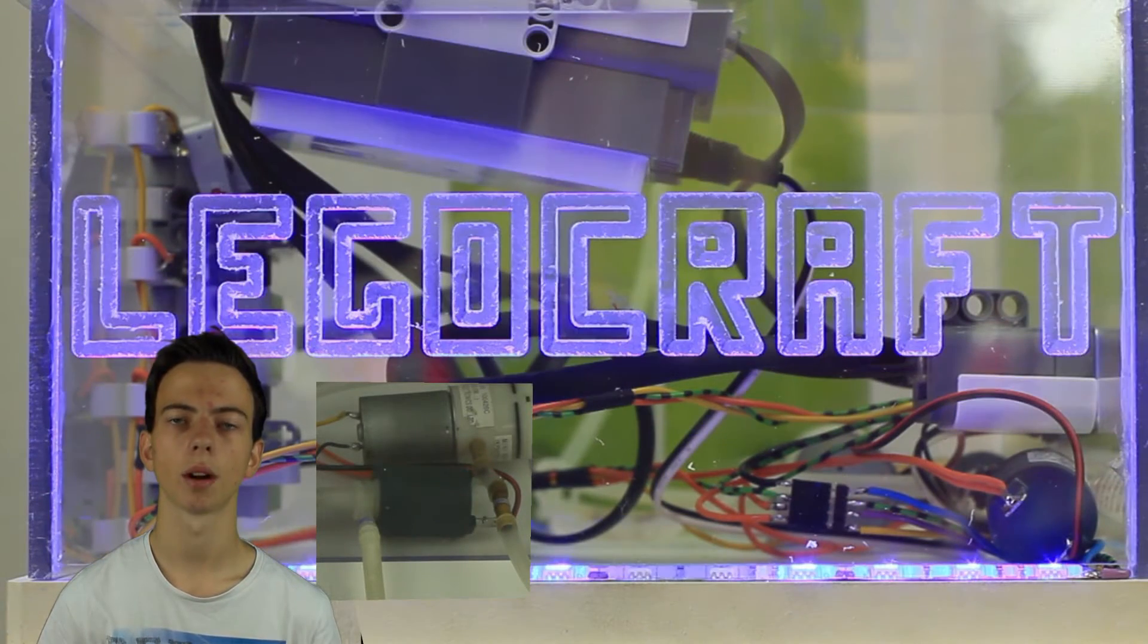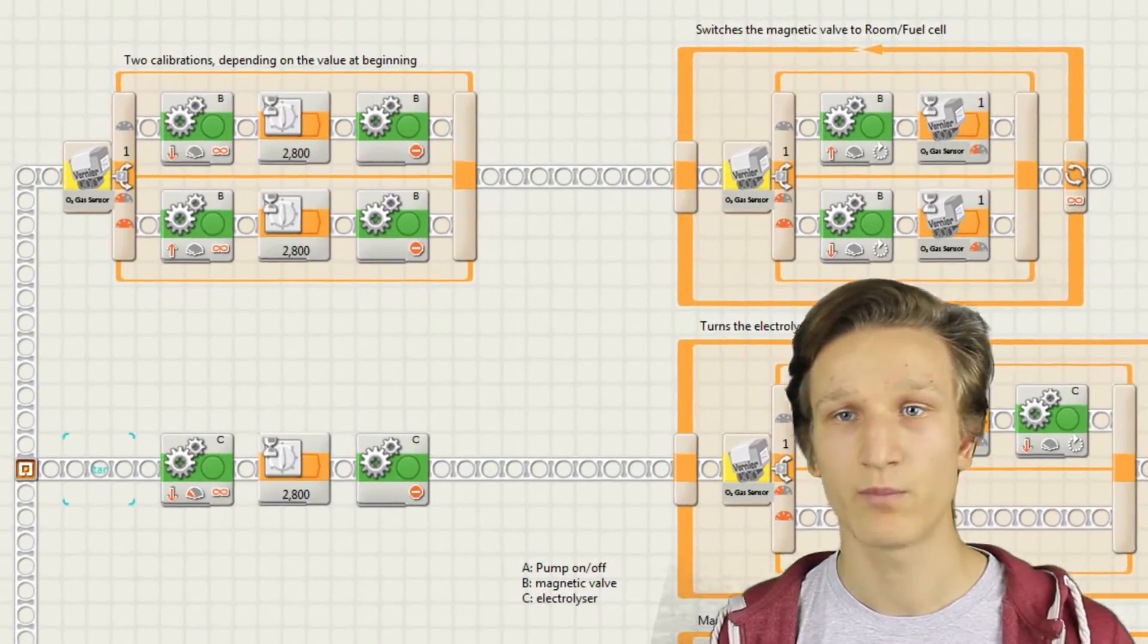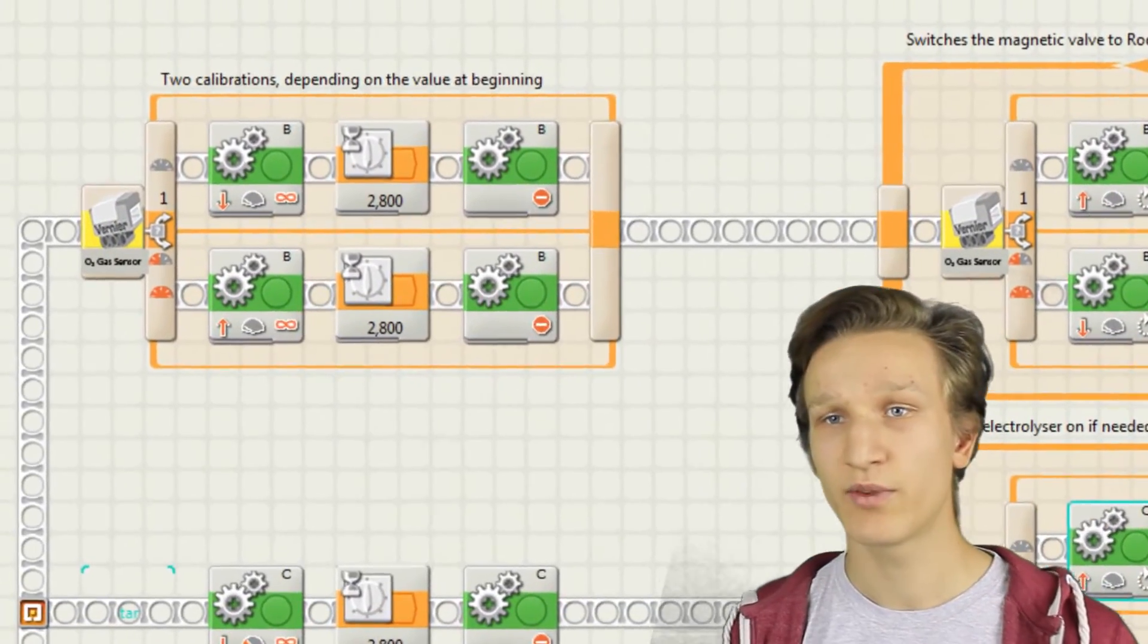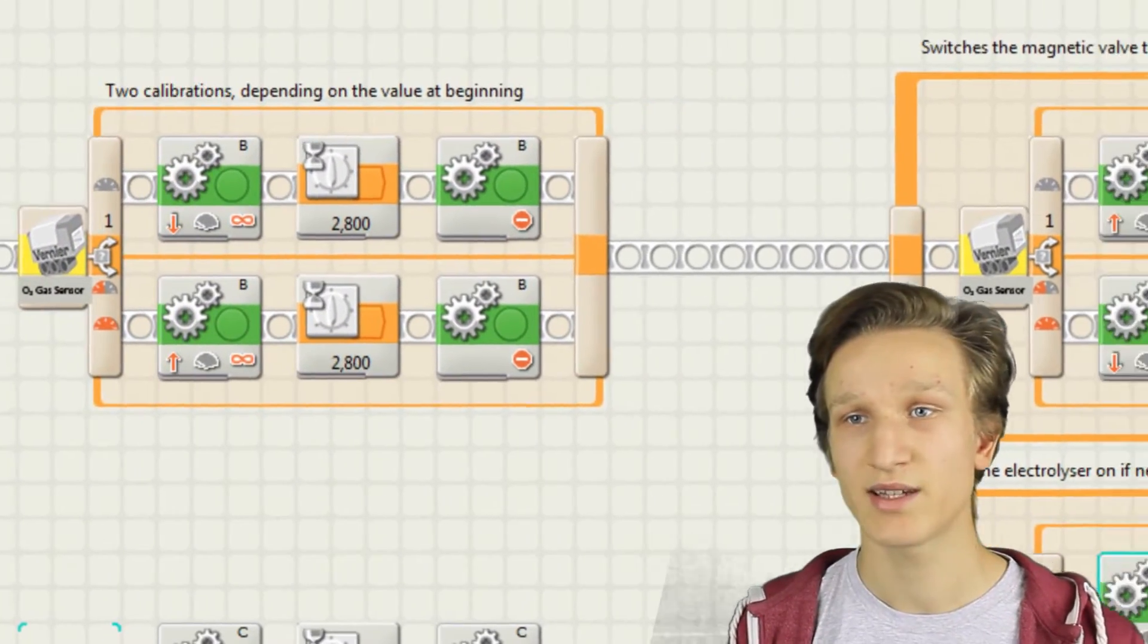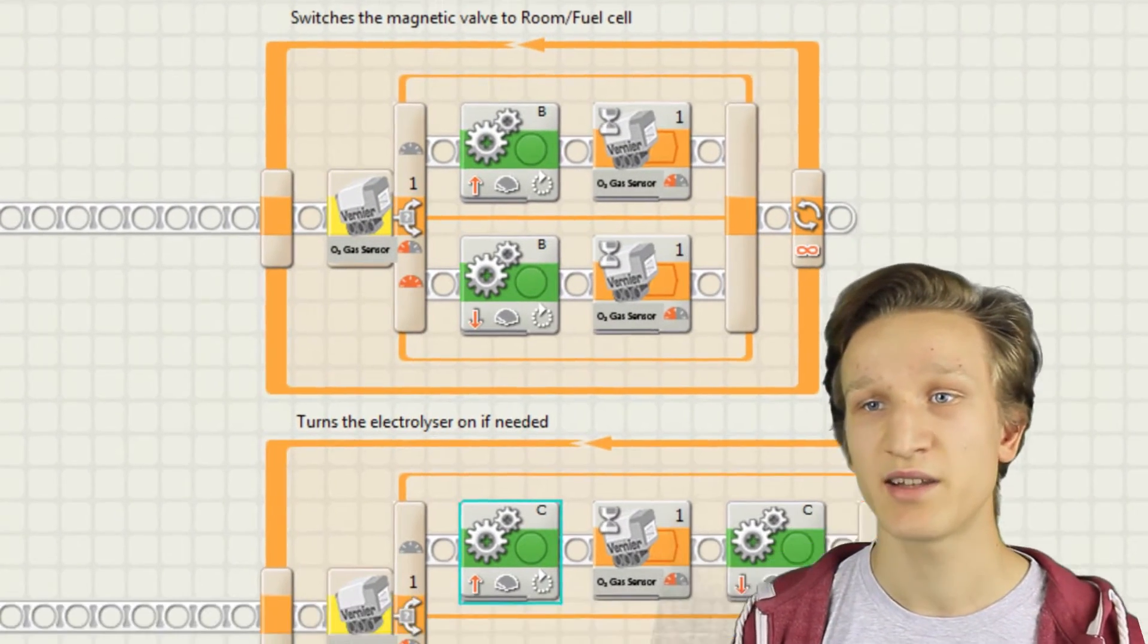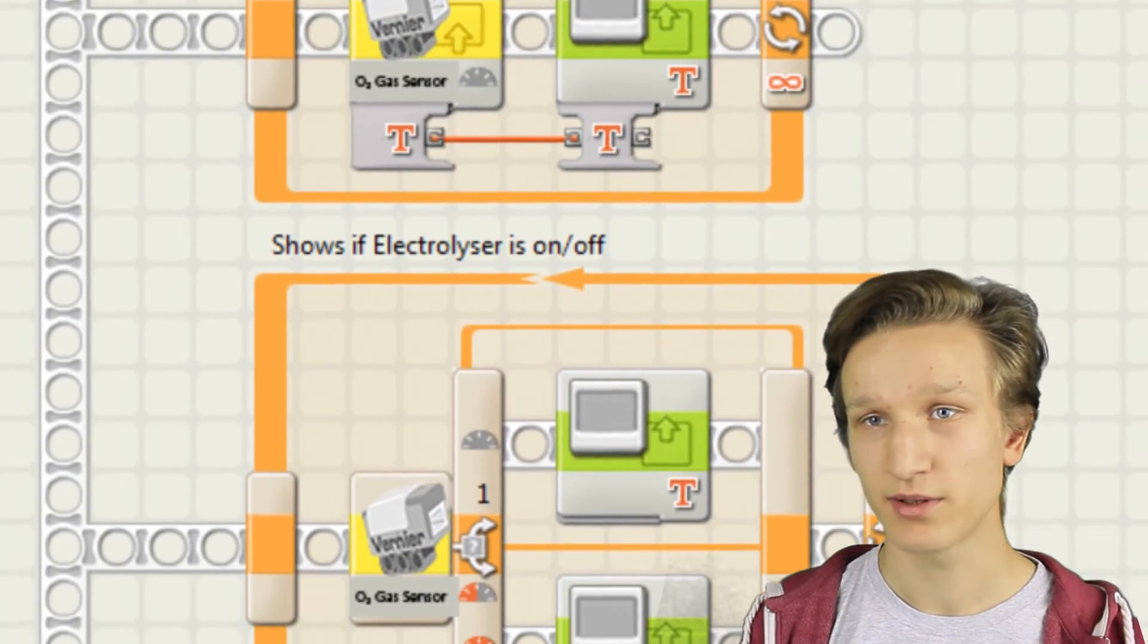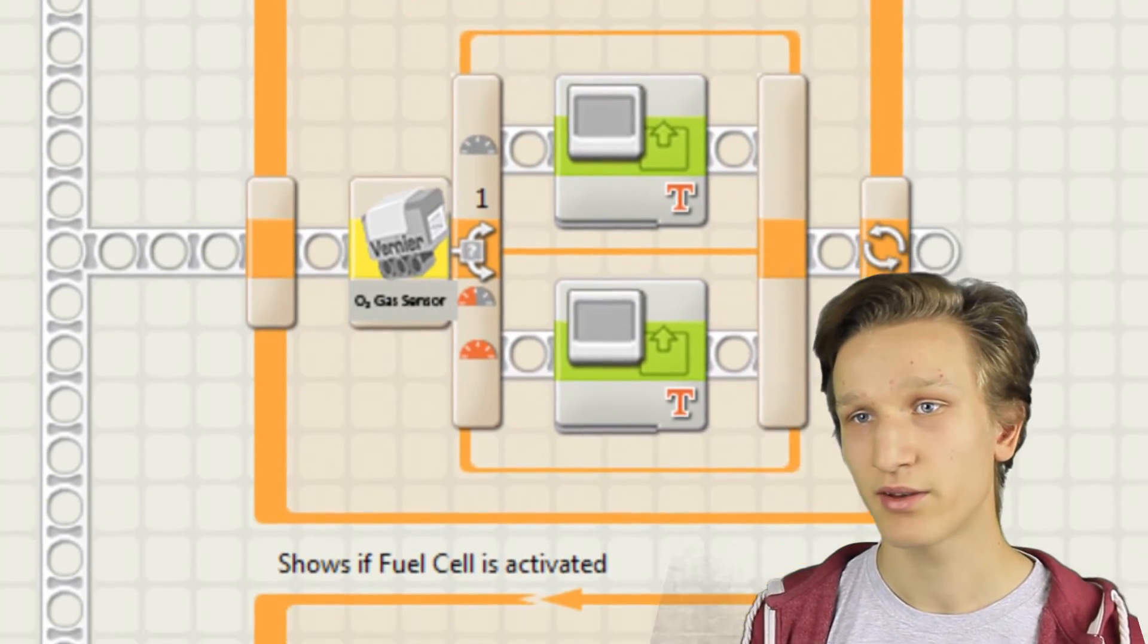The program can be separated into three parts. Part one is the calibration of the motors, the sensors, and everything else. Part two sets the valves to their correct position and analyzes the oxygen level to take action if needed. Part three is responsible for the frontend, allowing the current state of the system to be displayed.